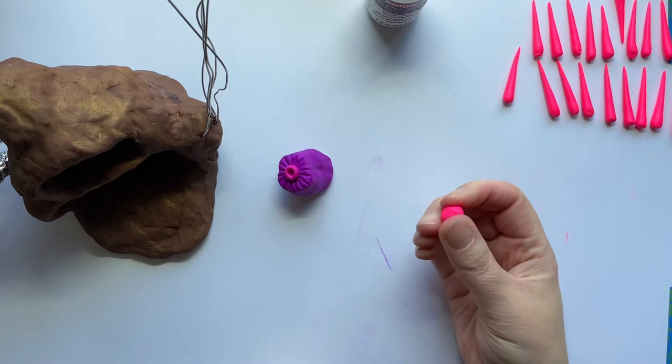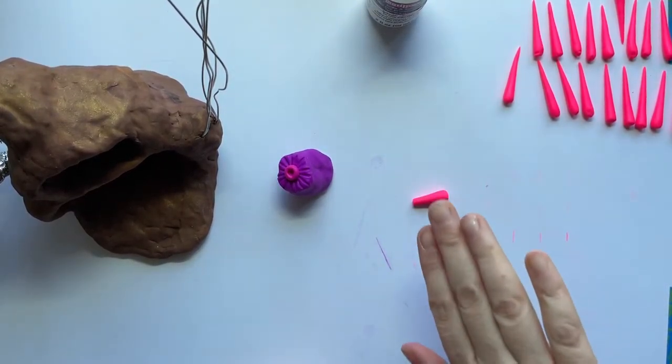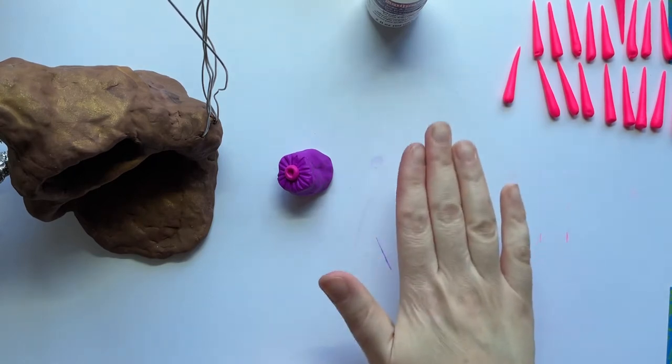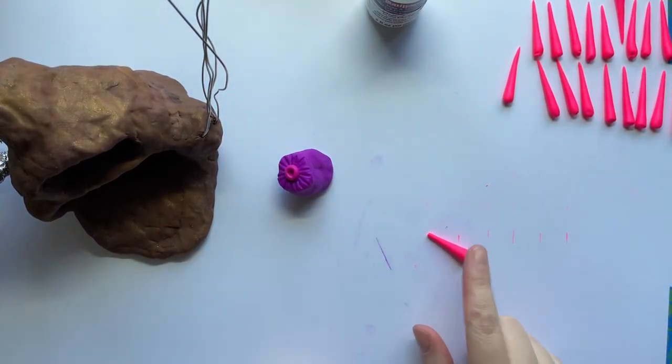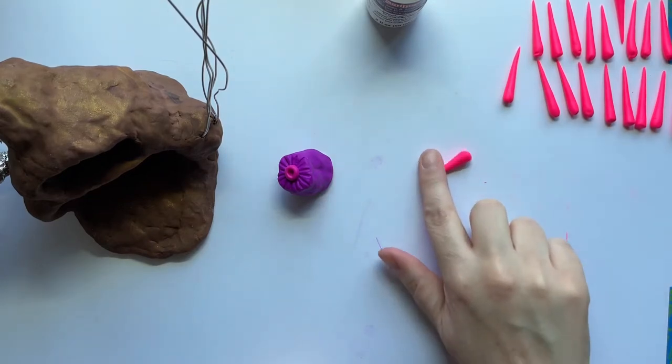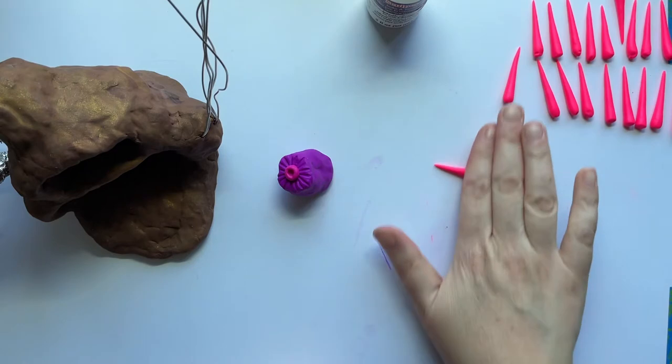So I just took a little teeny piece of clay and now I'm gonna start rolling it out, but I'm gonna have my hand at an angle. Instead of flat, I'm gonna angle it a little bit so that I'm not pushing as hard on this end and I'm pushing a little bit harder on that end so I can get it really nice and pointy.